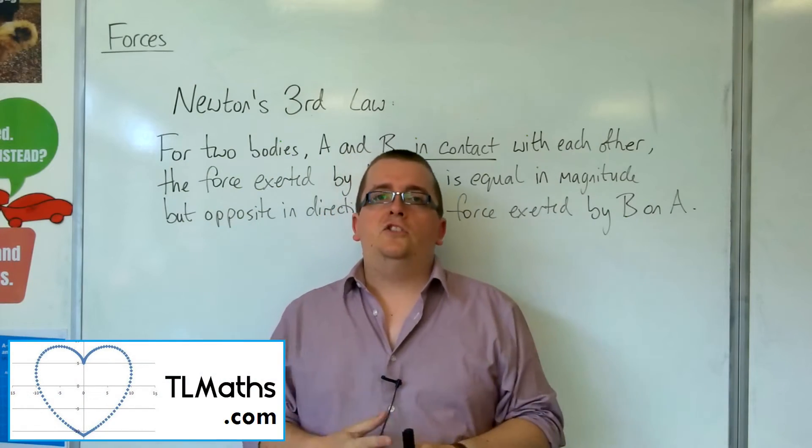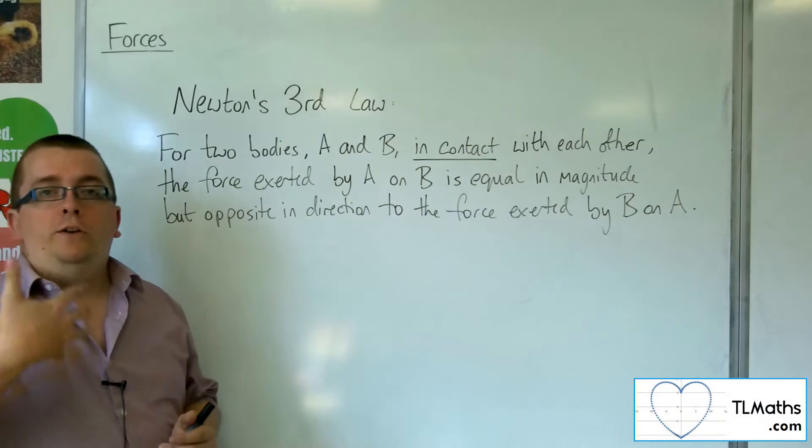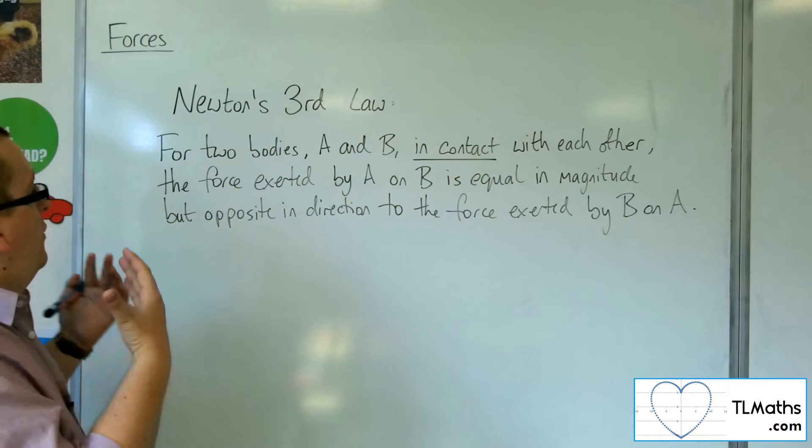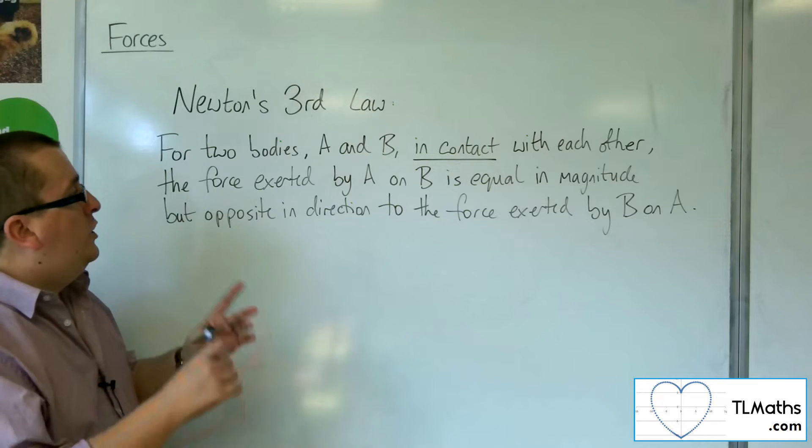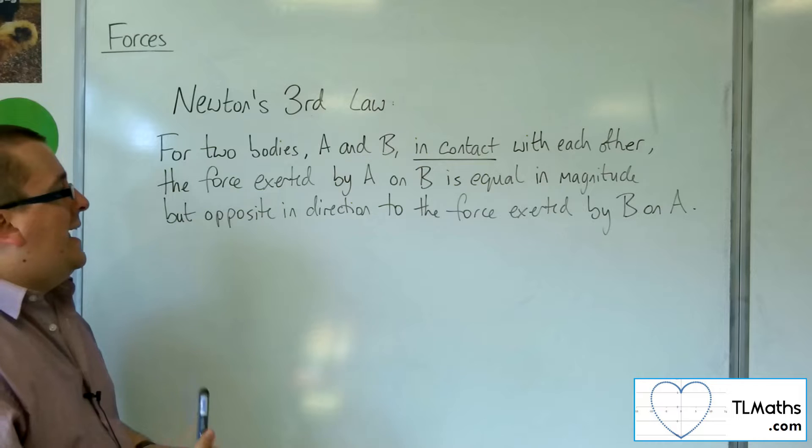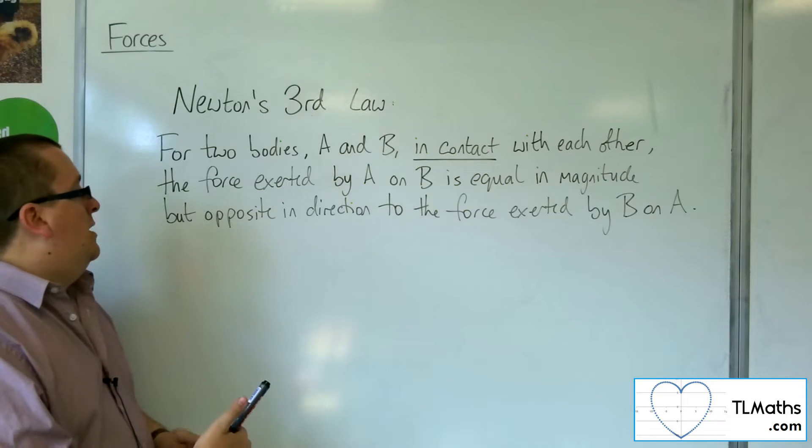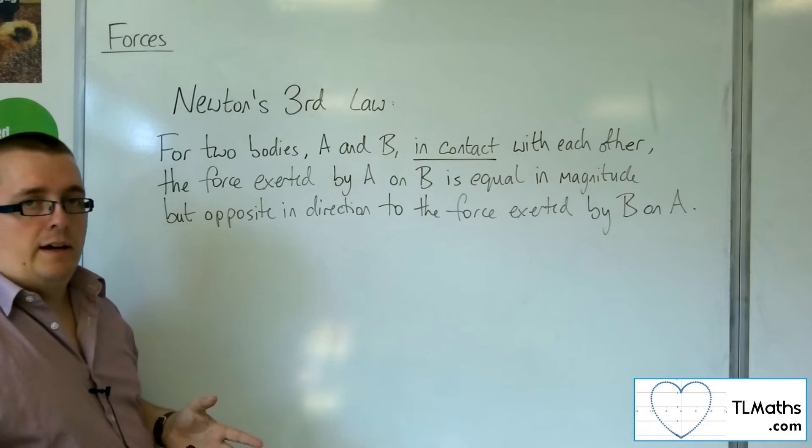We finally get to Newton's third law. We've worked through Newton's first and second laws. The third law states that for two bodies, A and B, in contact with each other, the force exerted by A on B is equal in magnitude but opposite in direction to the force exerted by B on A.